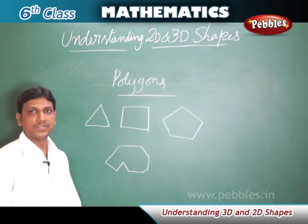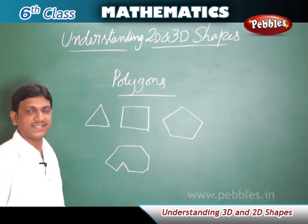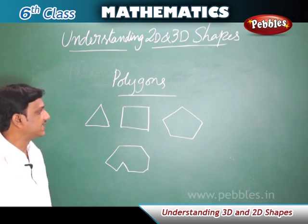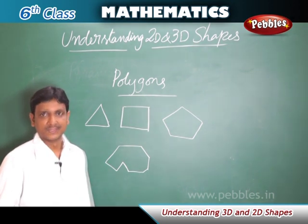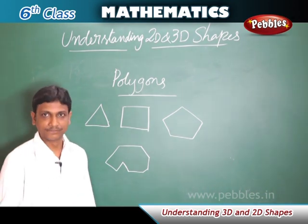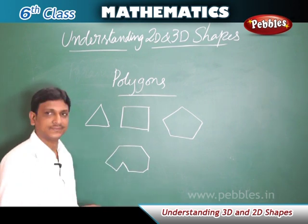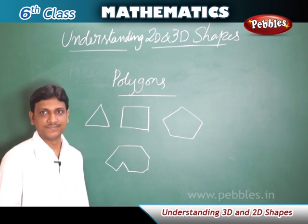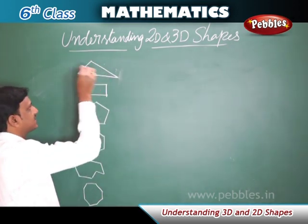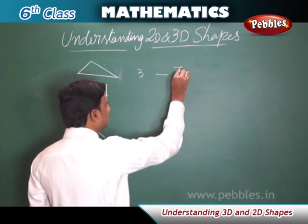Now we are going to learn about polygons. We already know from the basic geometrical ideas chapter that a polygon must have at least three sides. Any shape with three or more sides is called a polygon. Polygons are categorized according to their number of sides. A polygon with three sides is called a triangle.